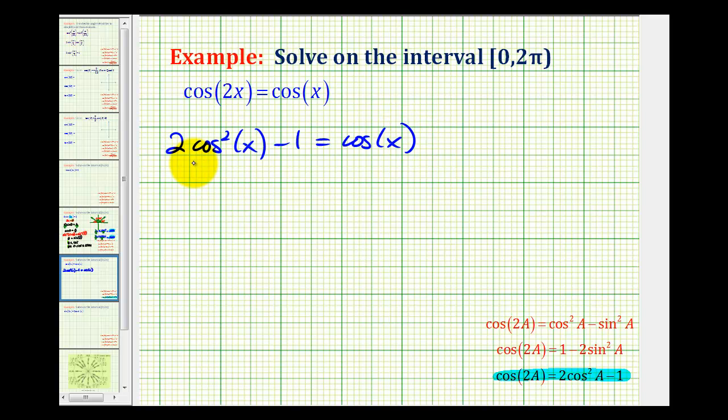Notice our equation is now in the form of a quadratic, so we're going to set this equal to 0 and then see if it factors. We'll subtract cos(x) on both sides.